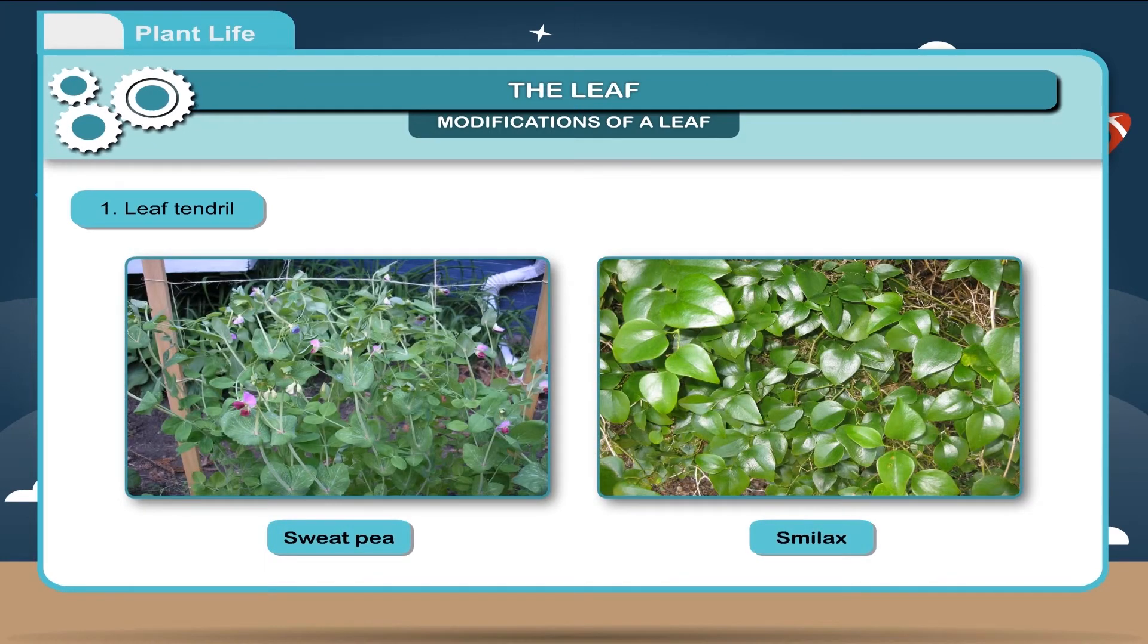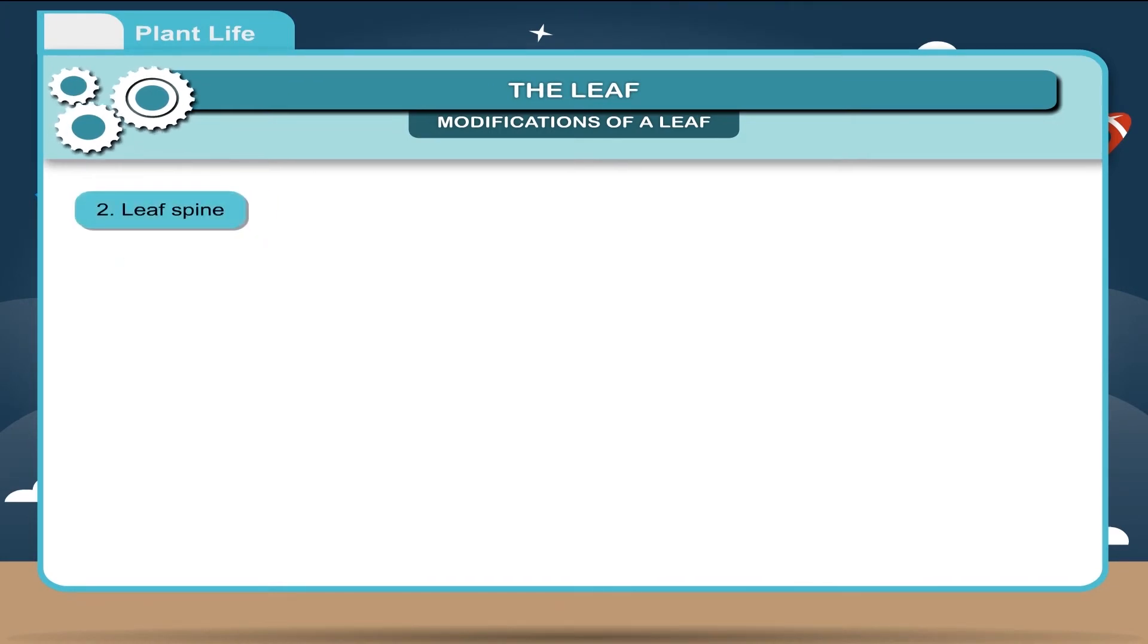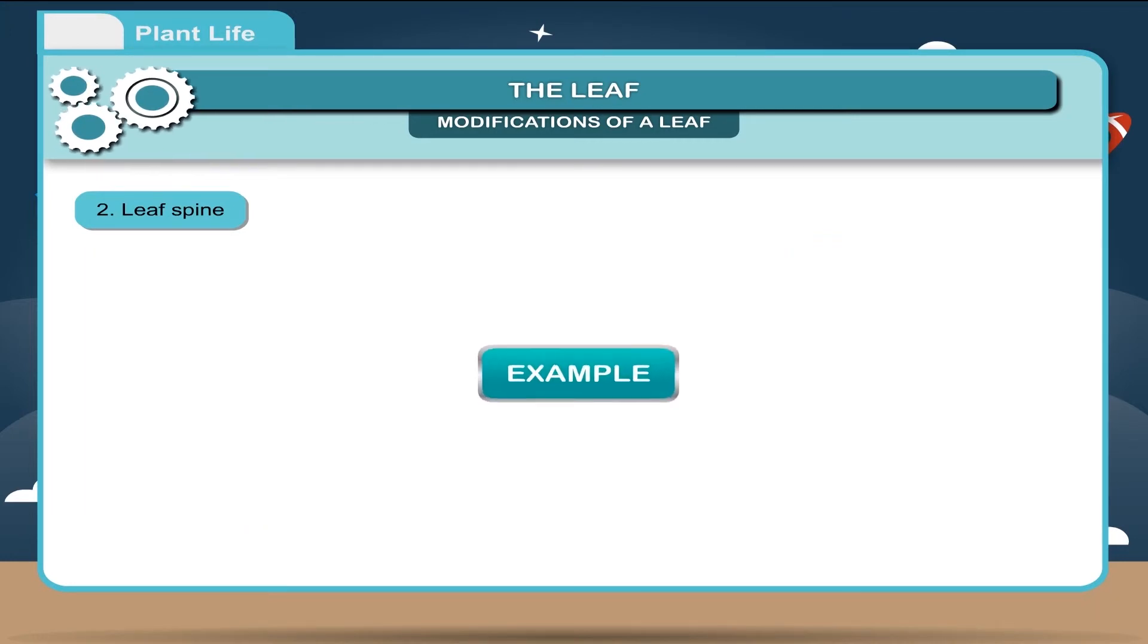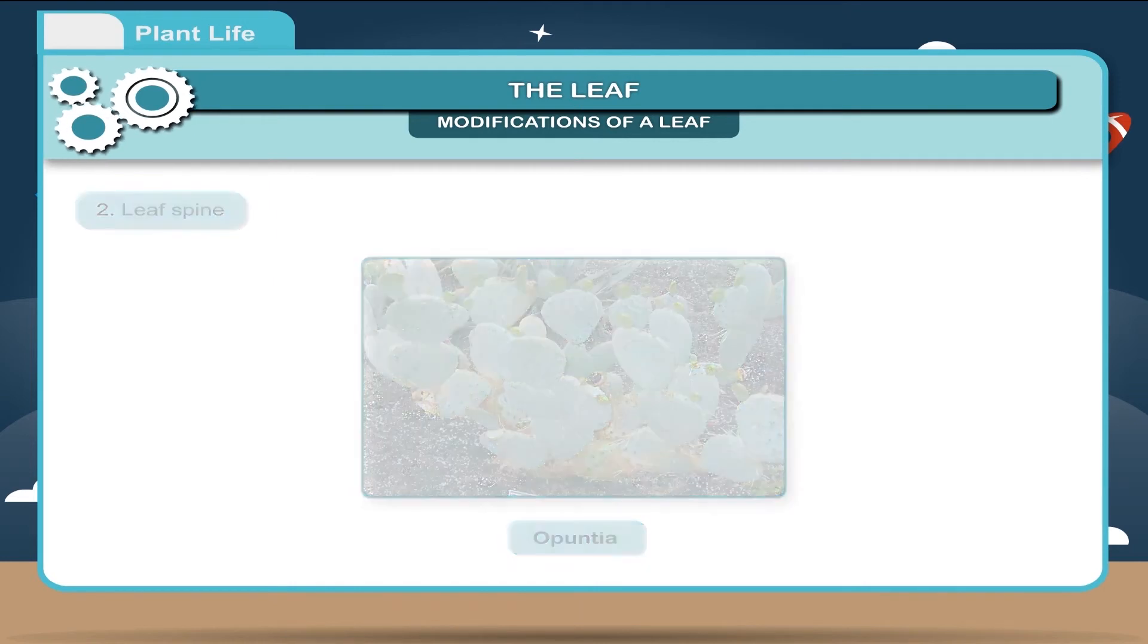In the leaves of xerophytes, desert plants like cactus, the leaves are modified into spines. The spines prevent water loss during transpiration. Example, opuntia.